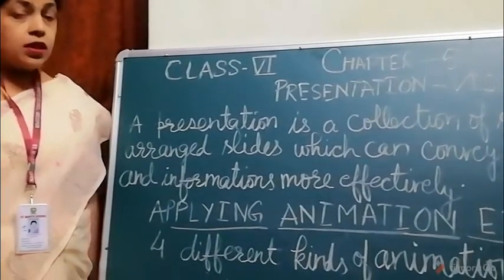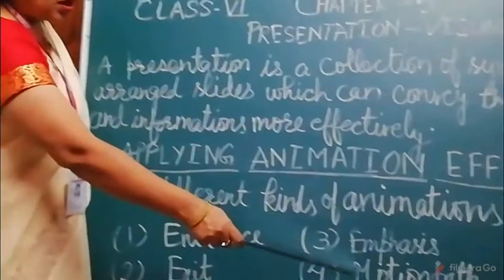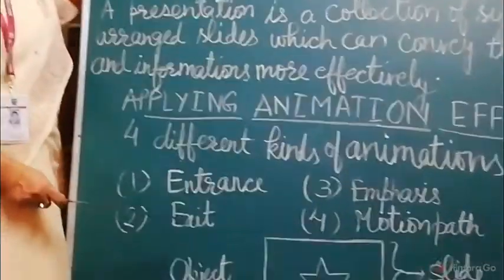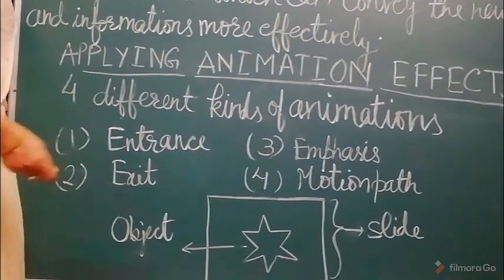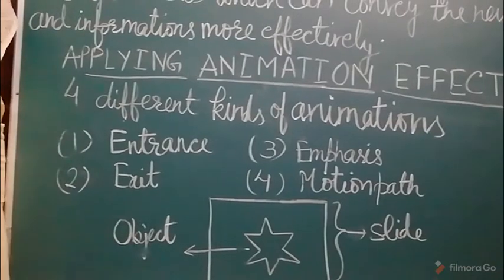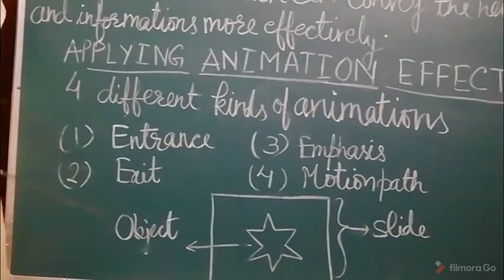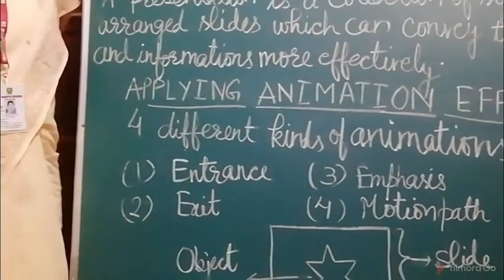A slide means a page of a presentation. And object means whatever you will write on the slide or insert, like any table or shapes. These are called the objects of the slide.